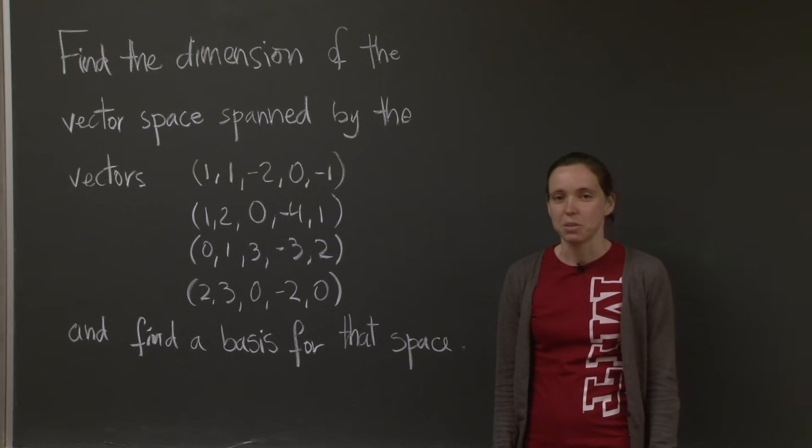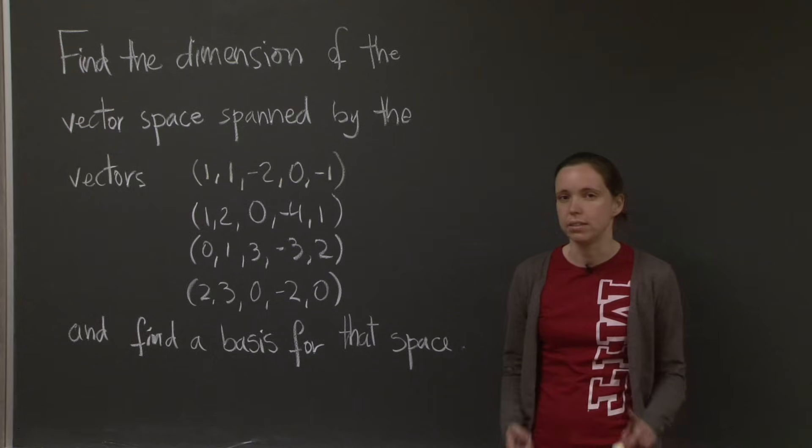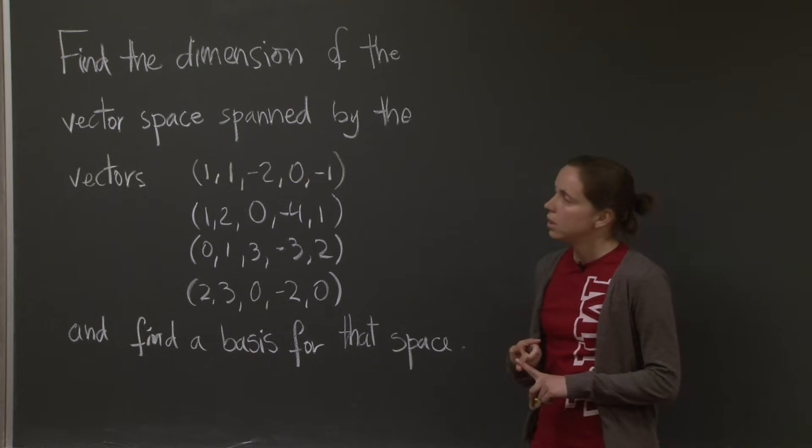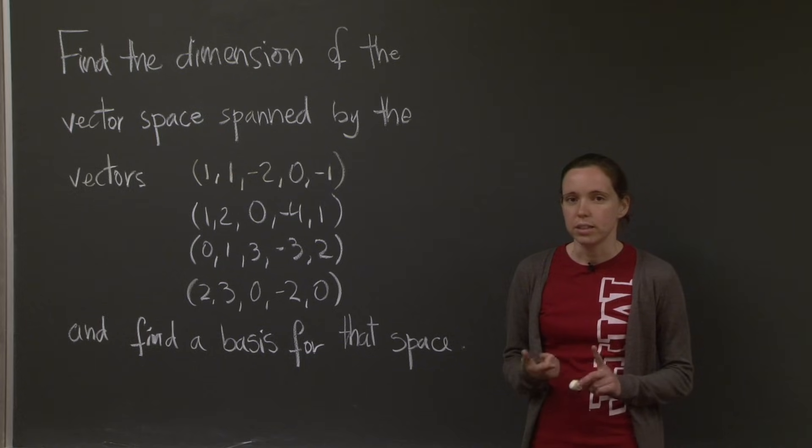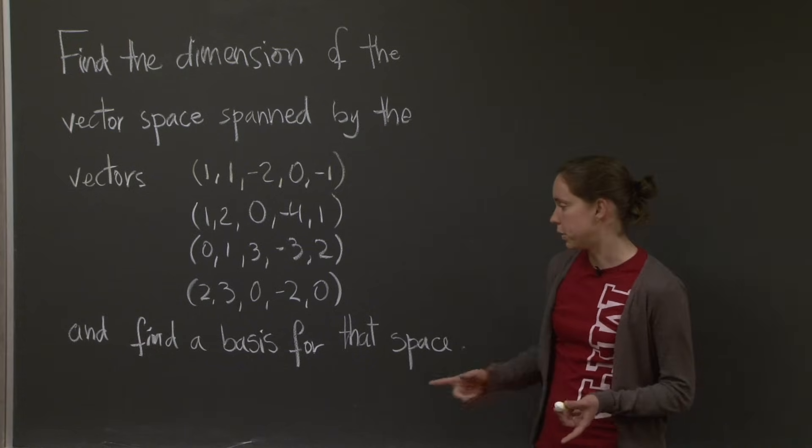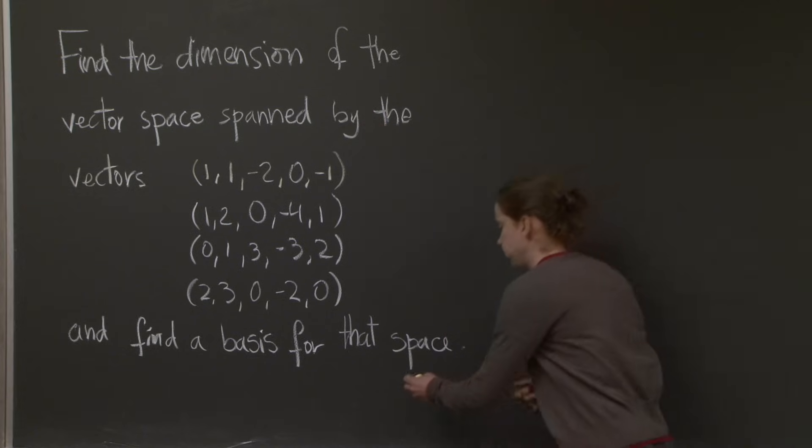All right. We're back. Let's work on it. Well, so we need to find the dimension and the basis. Remember what the dimension is? It's simply the number of vectors in a basis for the vector space. So actually, the problem is backwards. We want to find the basis for the space first, and then find the dimension.